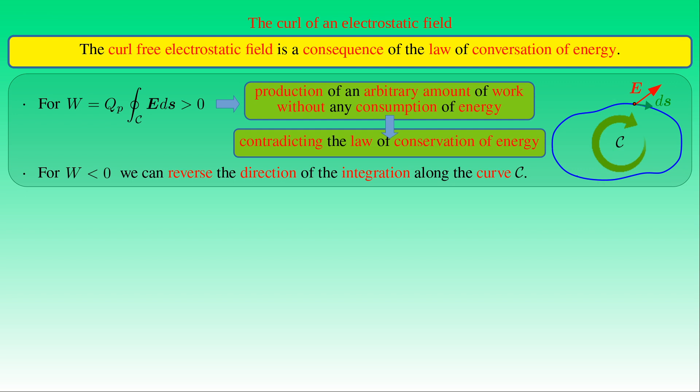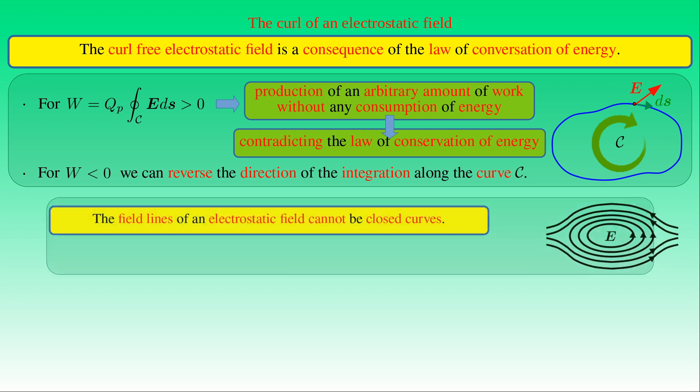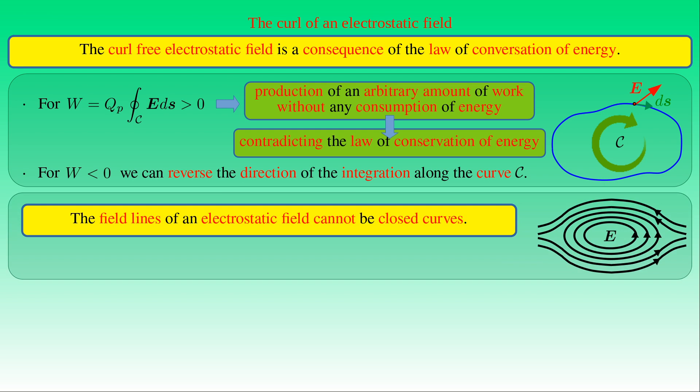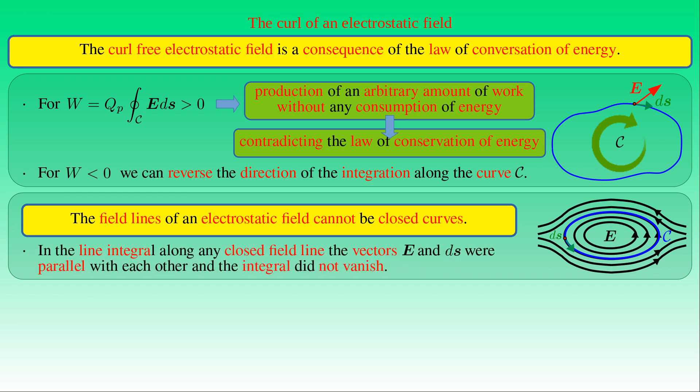A consequence of the vanishing line integral is that field lines of an electrostatic field cannot be closed curves, as shown in the figure. If the field lines formed closed curves, we could compute the line integral along a curve C representing one of those closed field lines. In that case, the electric field strength E and the differential arc length vector dS would be parallel along the curve, so the integral would not vanish — contradicting the initial statement. This precludes the existence of closed field lines in an electrostatic field.